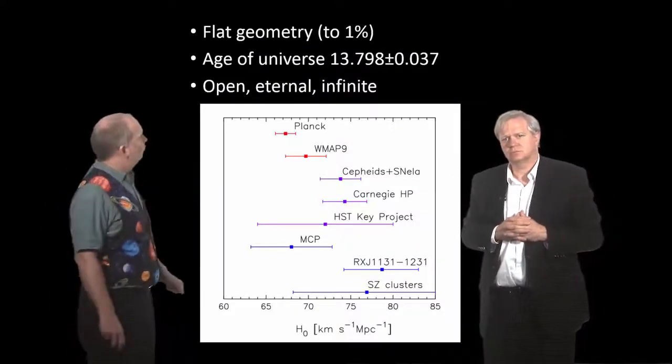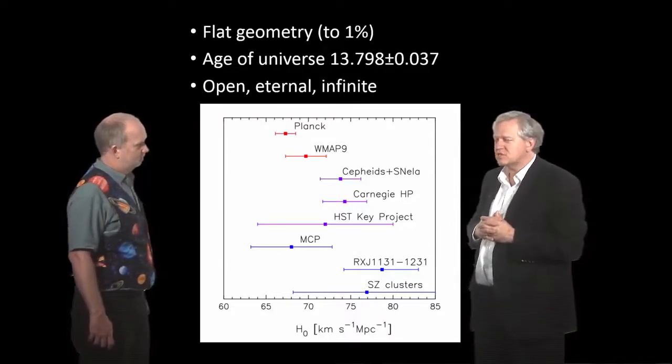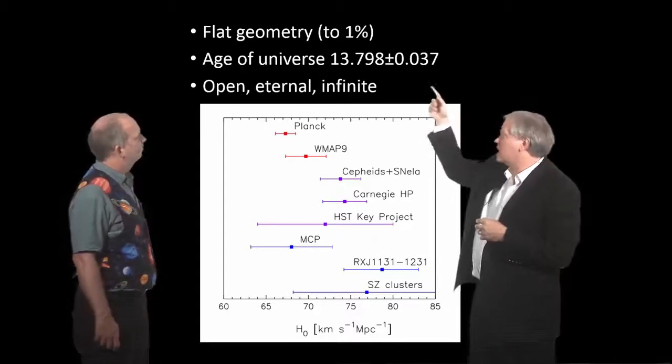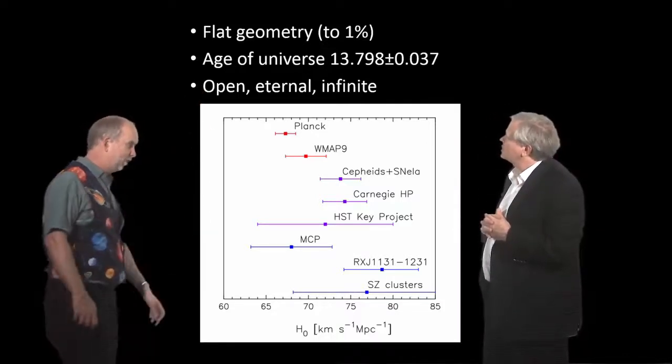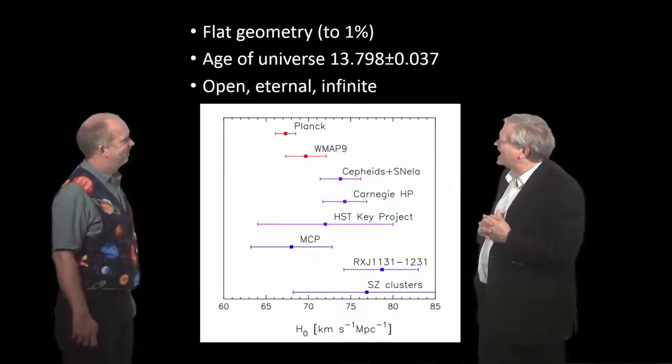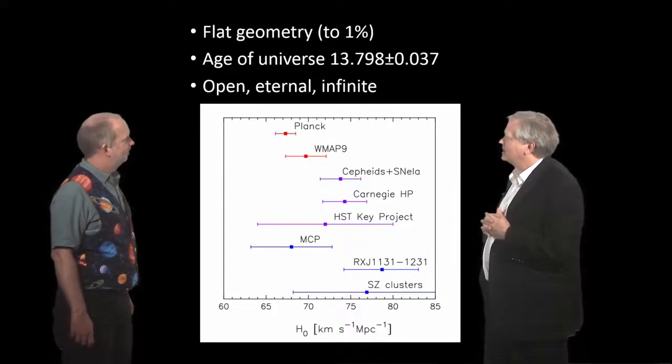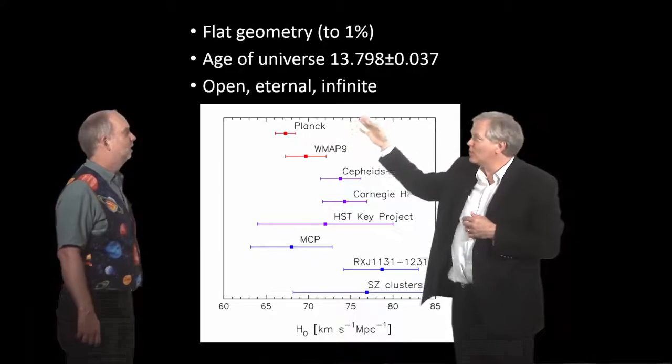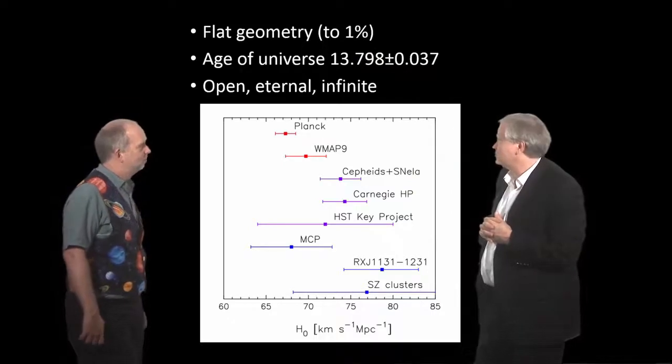So, what universe do we live in? We live in a universe that's flat to within 1%, or maybe even a bit better than that now. Yeah, it's better than a half a percent. And pretty much there's no way around that. All of the measurements, even with the uncertainties, really nail with the cosmic microwave background that that answer seems to be right. And we know the age of the universe, with the precision unmatched since Archbishop Usher said it was 4004 BC. 13.798 billion years plus or minus 0.037. That is incredible precision. The one thing we're not sure about is whether or not the universe is open, eternal, or infinite, because it's on that knife edge where you can't tell.